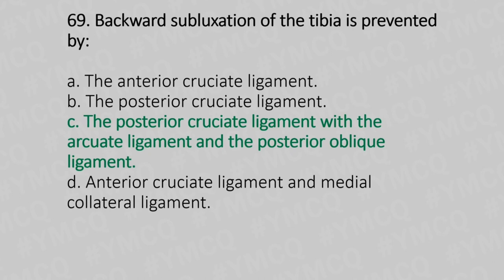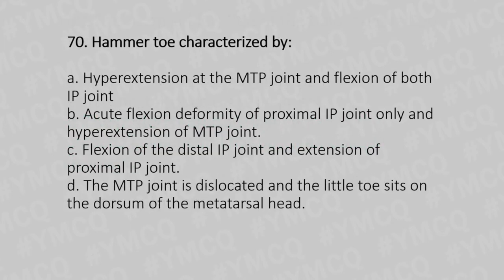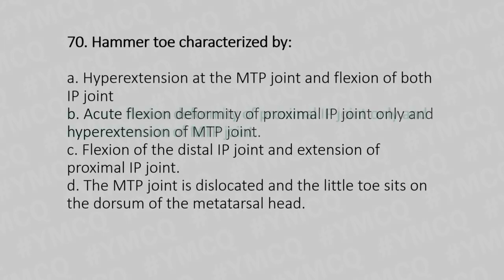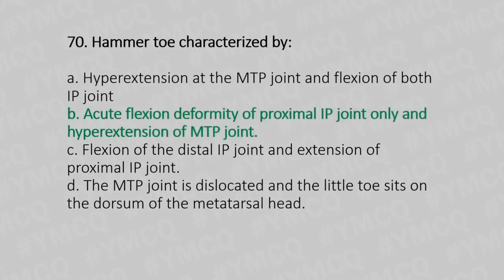Now let's move to question number 70. Hammer toe is characterized by. Option A: hyperextension of the MTP joint and flexion of both IP joints. Option B: acute flexion deformity of proximal IP joint only and hyperextension of the MTP joint. Option C: flexion of distal IP joint and extension of proximal IP joint. Option D: the MTP joint is dislocated and the little toe sits on the dorsum of the metatarsal head. And the answer is Option B, acute flexion deformity of proximal IP joint only and hyperextension of the MTP joint.